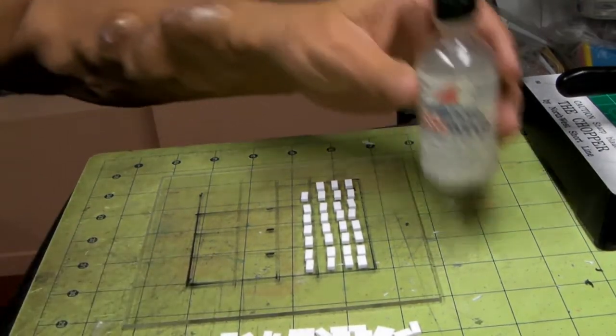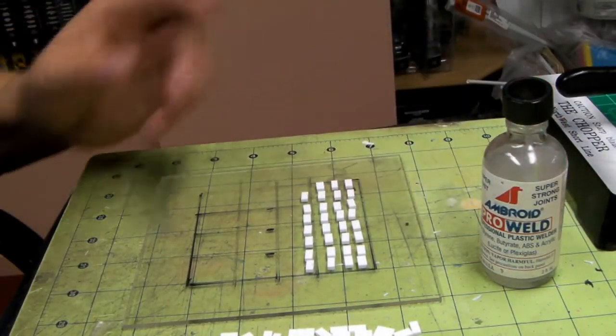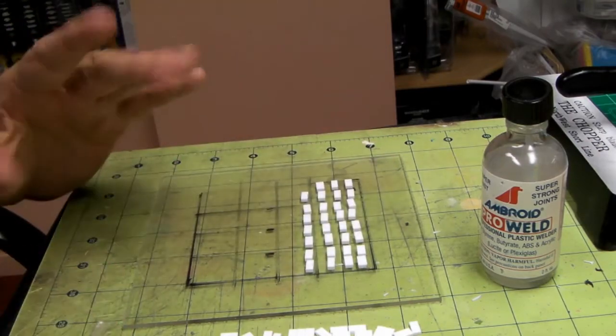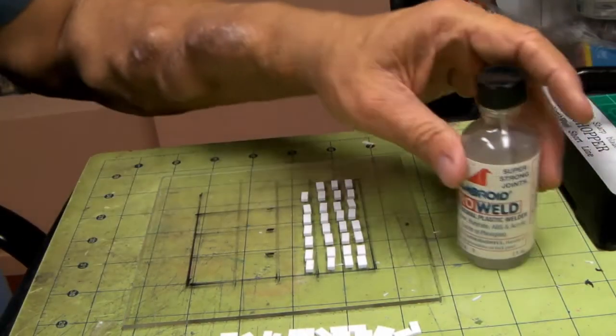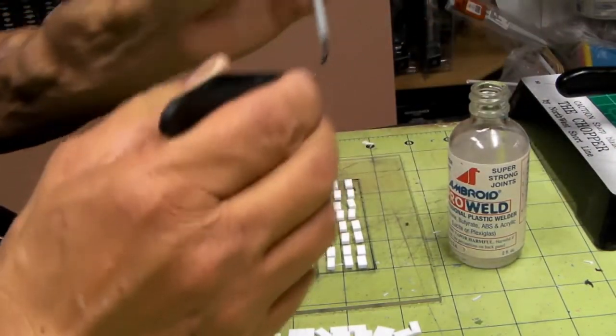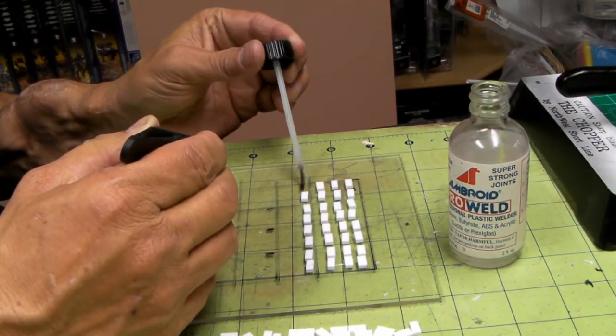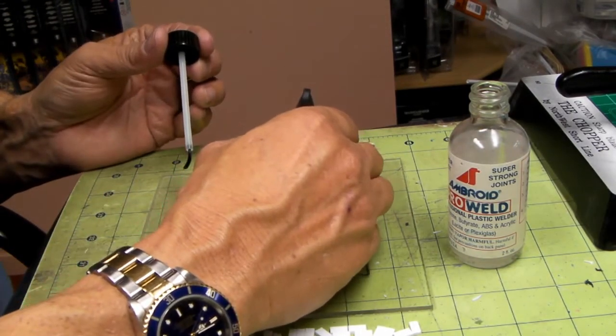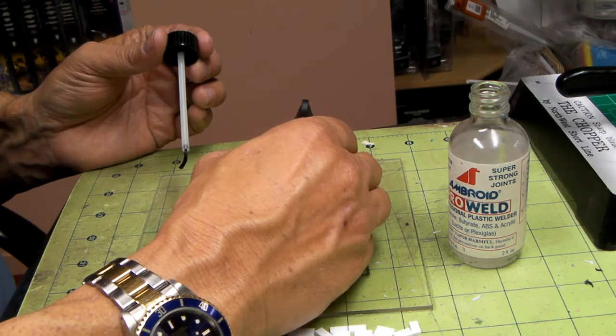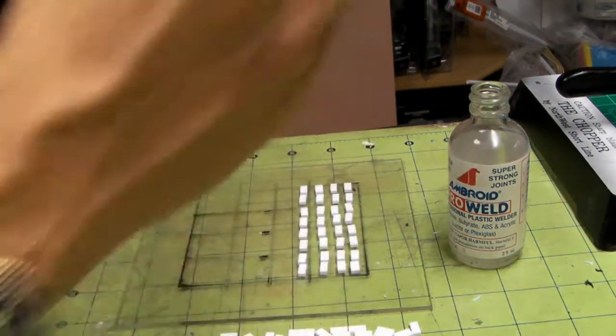We got some plexiglass and some styrene. This is something really simple. Like I said, I'm not doing it exact, but we're having some kind of uniformity to it. I'm just taking the brush here and just putting a little dab on the acrylic itself and then setting that down.